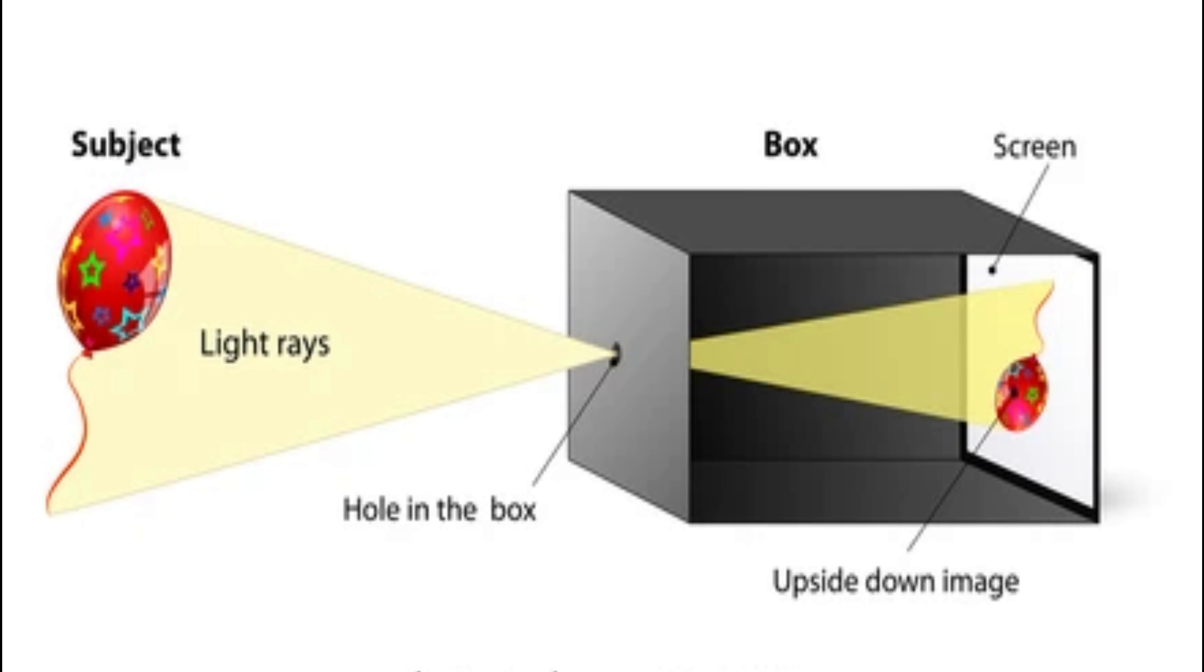Look at the picture. The light rays that come from the top of the balloon pass through the small hole and reach the bottom of the screen, and the light rays from the bottom of the balloon reach the top of the screen.